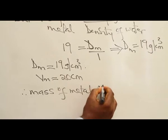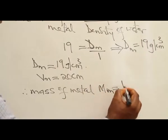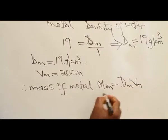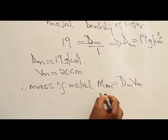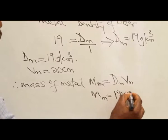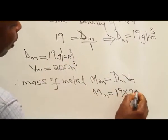Mm equals the density of the metal times volume of the metal. The mass of the metal will give me 19 times 20 centimeters cubed.